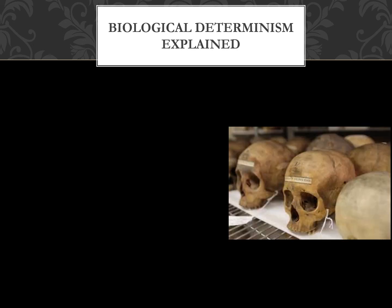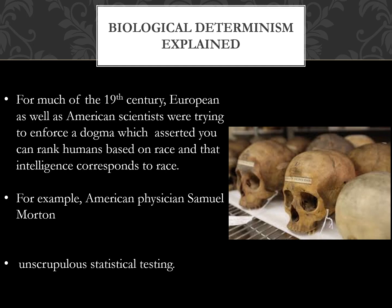Biological determinism was the major prevailing thought in anthropology during Boas's era. For much of the 19th century, European and American scientists enforced the dogma that you can rank humans based on race and that intelligence directly corresponds to race. The example is American physician Samuel Morton, who measured skulls and used unscrupulous statistical testing with a ridiculously small sample size to make broad statements about skull size and intelligence.